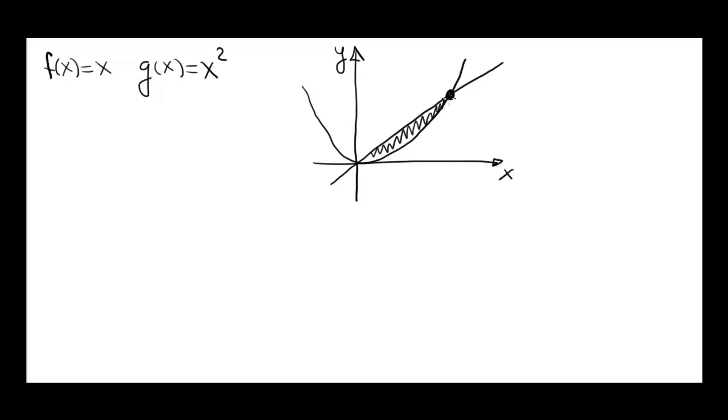We need to find point of intersection here and point of intersection here. This is the graph, the top function f of x equals x, and this right here is g of x equals x squared.